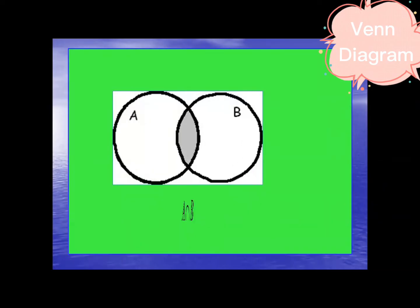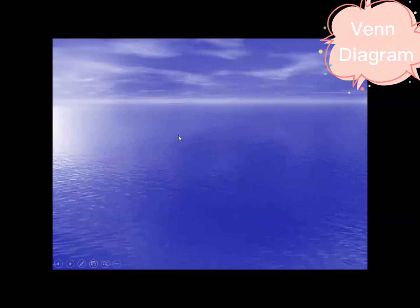Next we have intersection. In the intersection is the common, A intersection B - the common between the two sets. So A here and B. The center is the common between the two sets. So that is A intersection B.